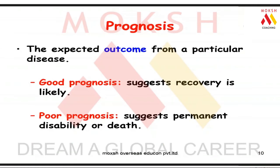Prognosis means the most likely expected outcome from a particular disease. For malaria, the prognosis is good — you'll be treated within a week. For AIDS (acquired immunodeficiency syndrome), there's no cure, so the outcome is death eventually, perhaps 20 years later. For liver cancer, prognosis may be 6 months to one year. Good prognosis means recovery is highly likely; poor prognosis means death or significant morbidity.